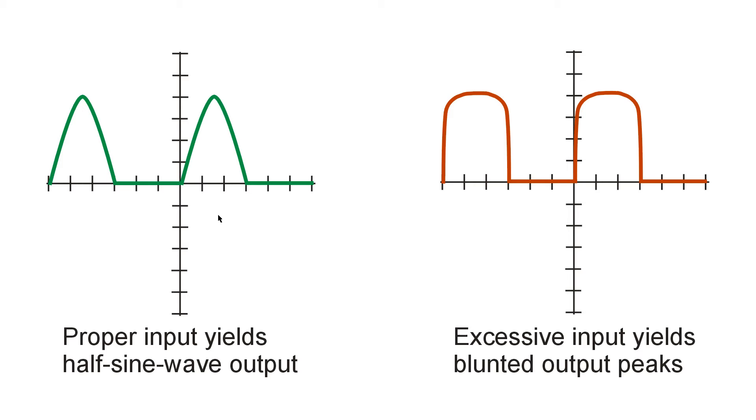This is a Class B Radio Frequency Power Amplifier. Now if you apply too much input, what happens is that the maximum or peak carrier wave amplitude can't exceed a certain level.